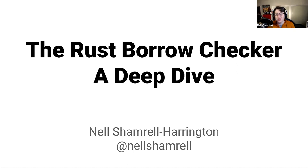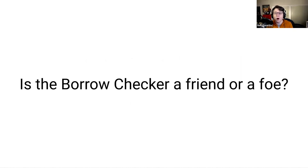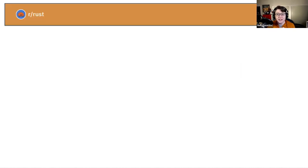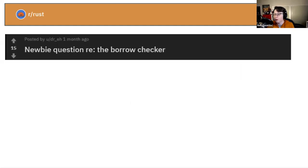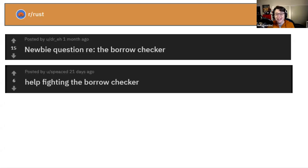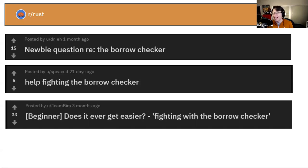When I work with someone who is just learning the Rust programming language, they sometimes question whether the Rust borrow checker — which is one of Rust's key features, one of those ways we avoid dangling pointers and other memory safety issues — is their friend or their foe. If you take a look at the Rust subreddit, it's common to see posts like 'newbie question regarding the borrow checker,' 'help fighting the borrow checker,' and 'does it ever get easier fighting with the borrow checker?'